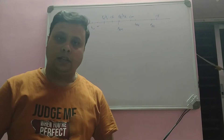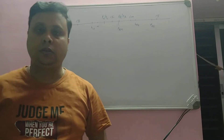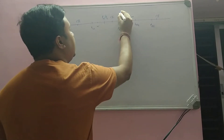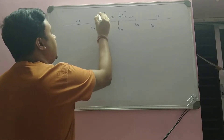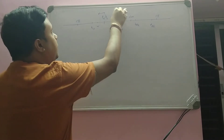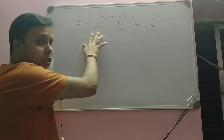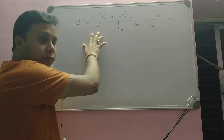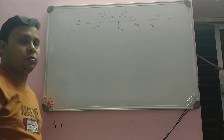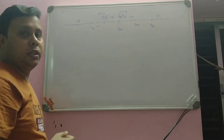Remember that when a lambda phage first gets incorporated into the bacterial cell, mostly one protein is present. The absence of CI causes RNA polymerase to initiate transcription from both PL and PR, and therefore RNA polymerase will be terminated at TL1 and TR1 — the left terminator and the right terminator respectively.